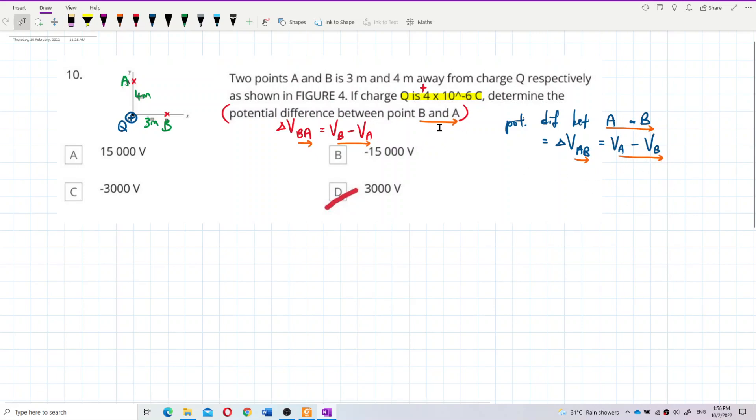So it is V_B minus V_A, and we know that potential formula is kQ over r.